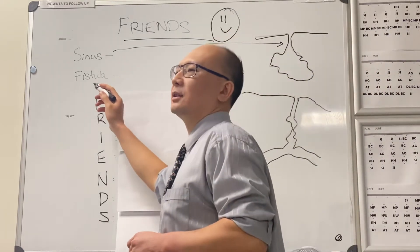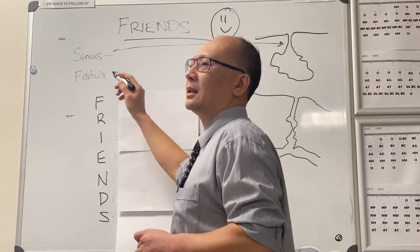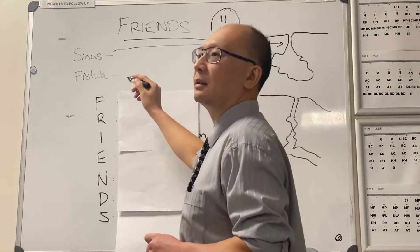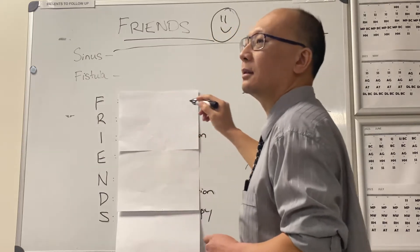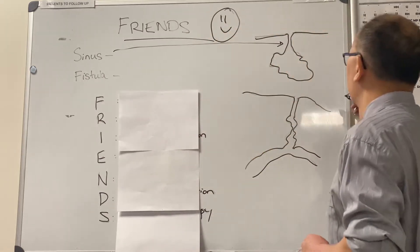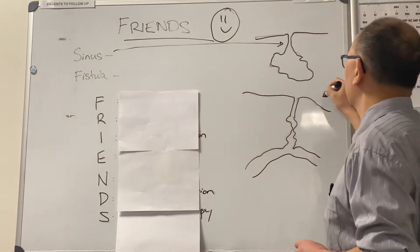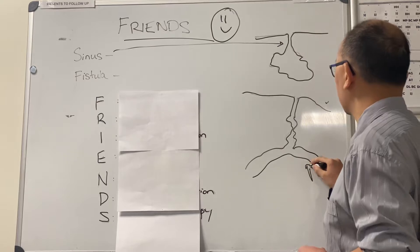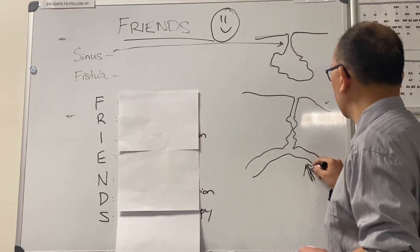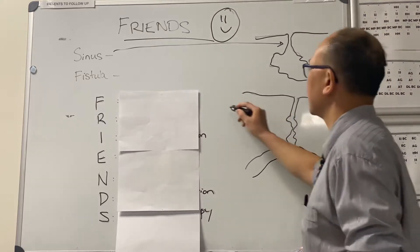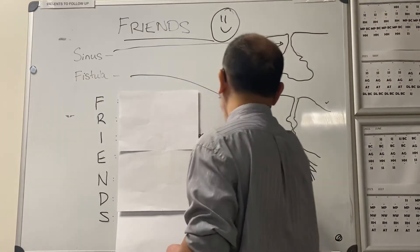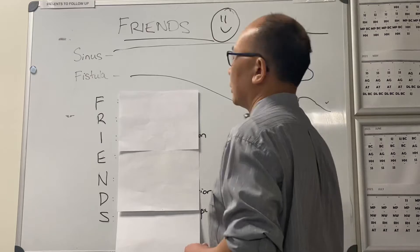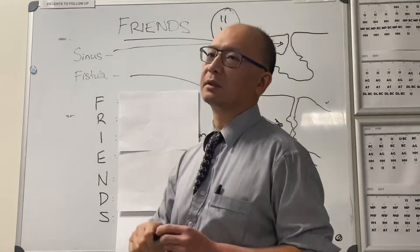We've got fistula — what's a fistula, Mickey T? I don't know. Yeah, like skin and maybe a tubal structure like bowel. That's an example of a fistula. So we've got a patient with a fistula on the ward.